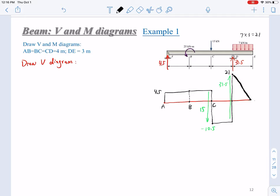At point E here, the final value will be zero. So this is our V diagram.